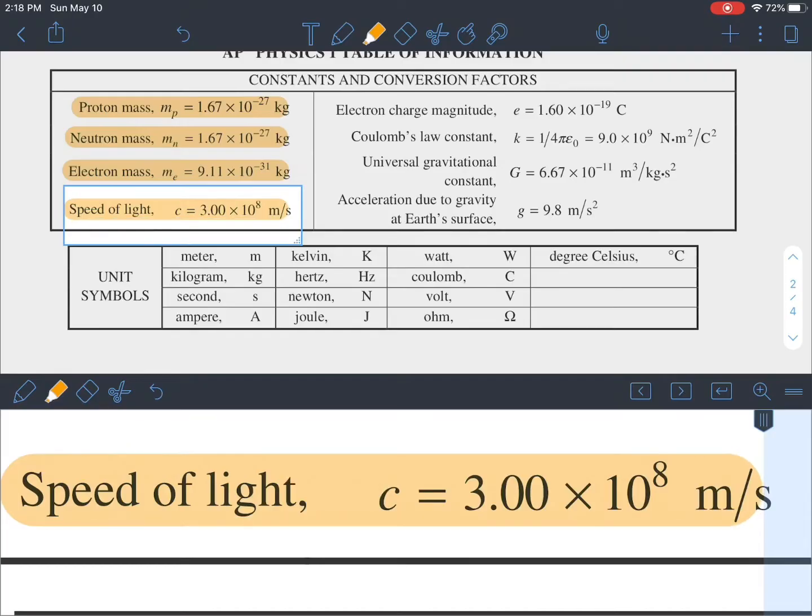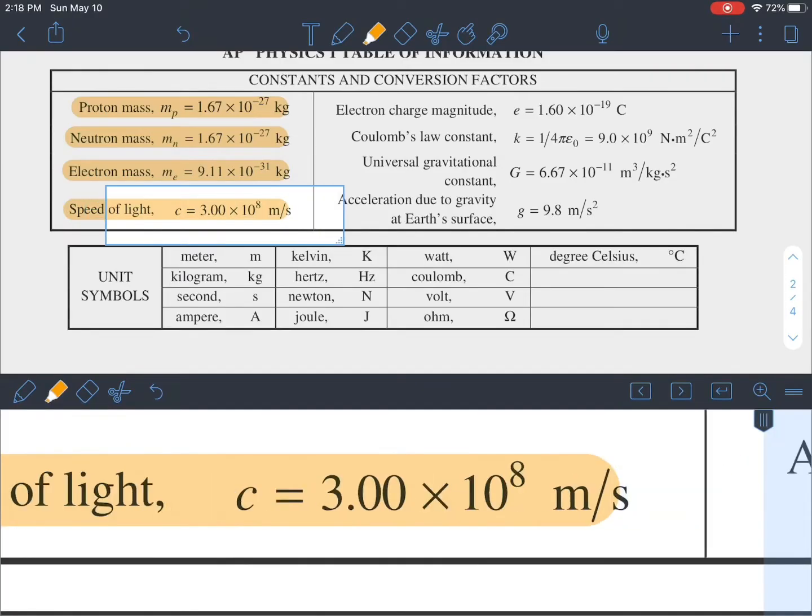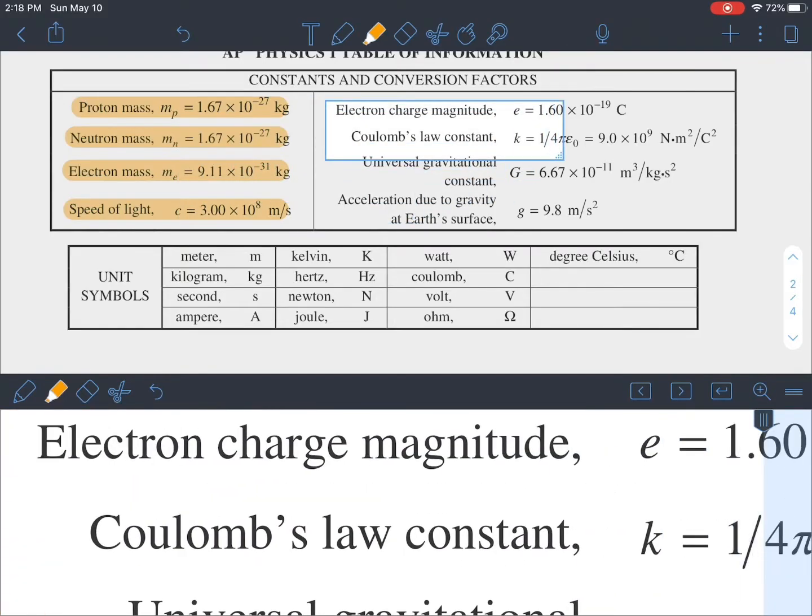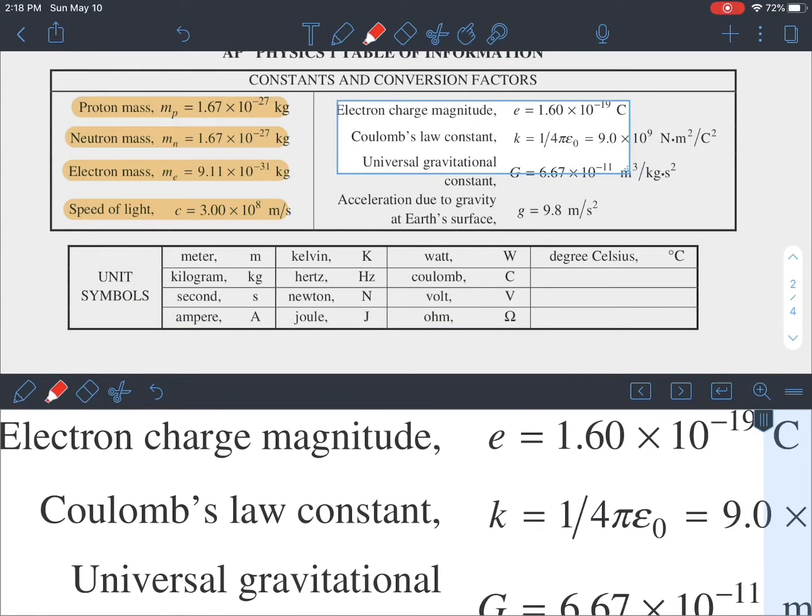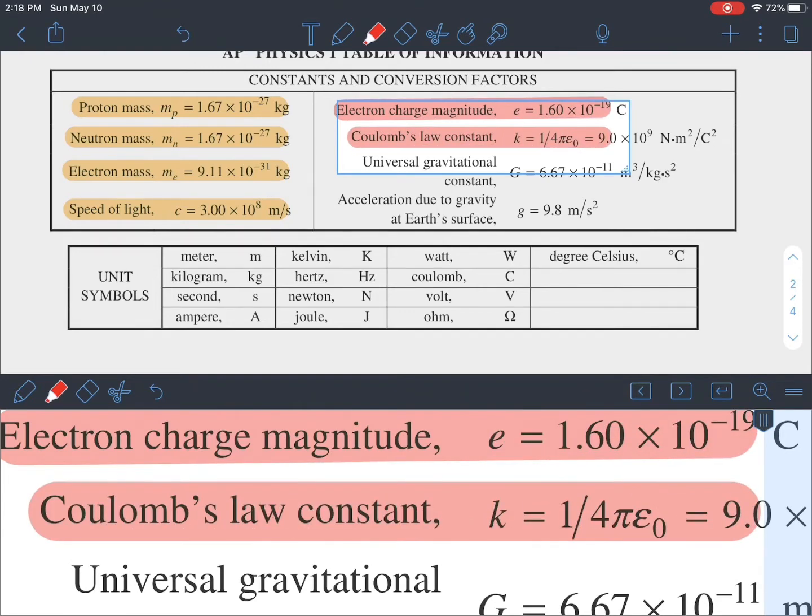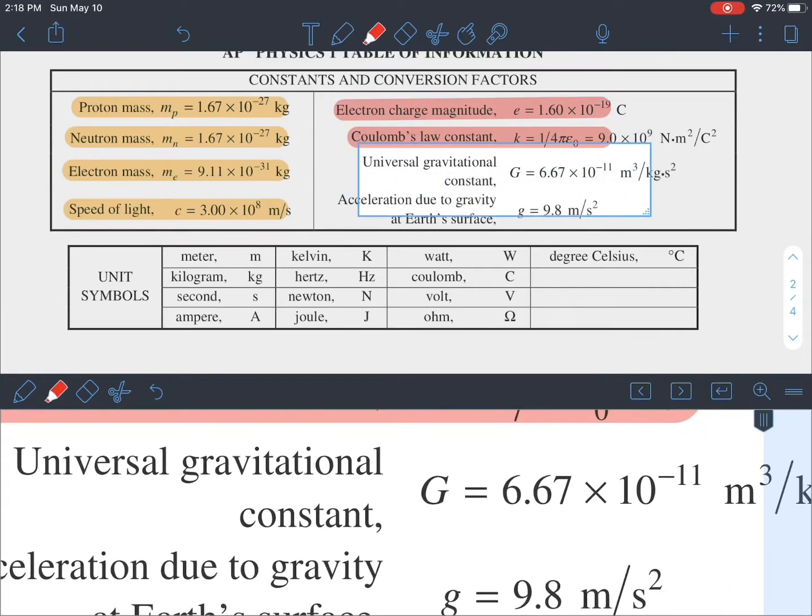The speed of light is the most important quantity and constant in the universe, and we're going to use the approximation three times ten to the eight meters per second. These next two for this particular exam we're going to not think about because they are part of the electricity and magnetism unit that is no longer being tested this year.